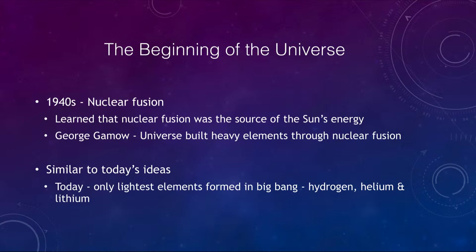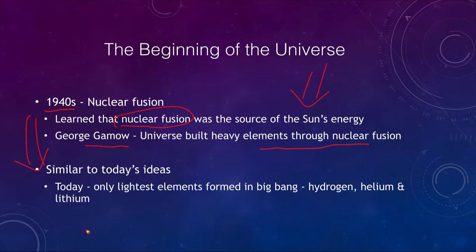More recently, in the 1940s, nuclear fusion was beginning to be understood — we had learned that nuclear fusion was the source of energy for the Sun. George Gamow said that the universe built the heavy elements through nuclear fusion, just as happens in stars. This is relatively similar to ideas we have today, except now we say that only the very lightest elements — hydrogen, helium, and maybe small amounts of lithium — formed in the Big Bang, and all heavier elements had to be formed within stars.